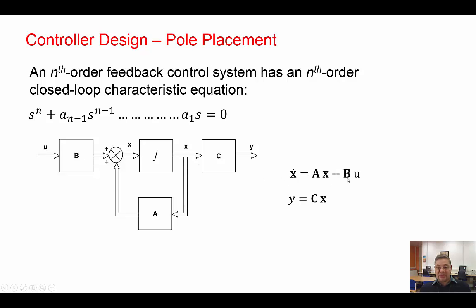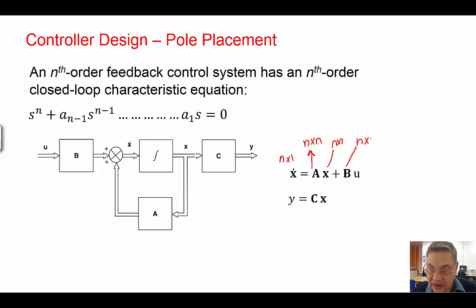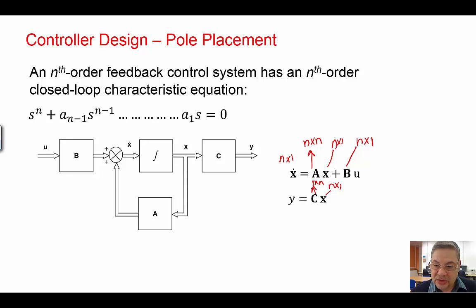The state space form is X-dot equals AX plus BU, and Y is the output matrix equation. We are multiplying matrices, so if X has n rows and one column, A the state matrix will be an n-by-n square matrix. B will also have n rows and one column. C will be one times n, and when you multiply, these dimensions have to match, giving you n rows and one column.